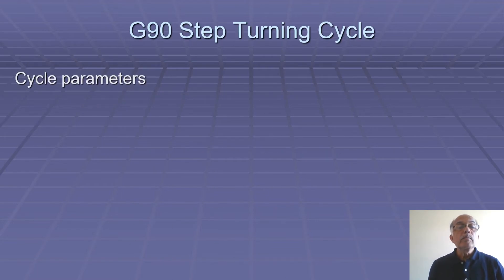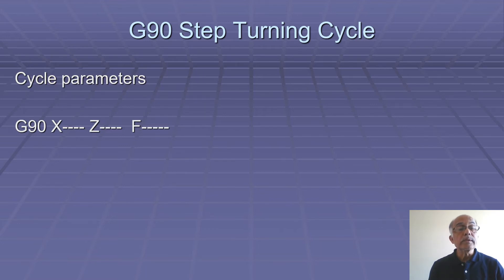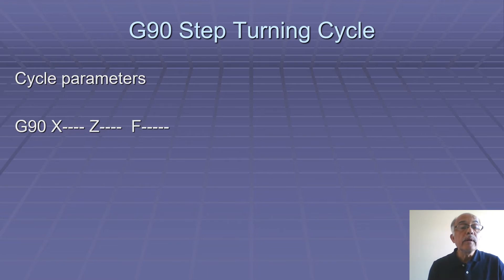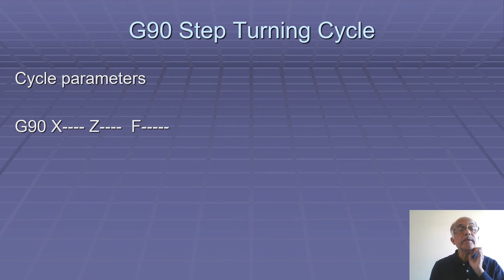Now we'll discuss the G90 step turning cycle and its various parameters. G90 cycle is used for external or internal step turning. Here we have to define each cut, so we have to make a program block for each depth of cut. G90 cycle has three parameters: X is the target diameter, Z is the target length — since this is a step turning operation, this Z length will be the same for each cut — and F is the feed. Z and F will be the same for each cut.